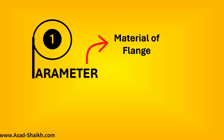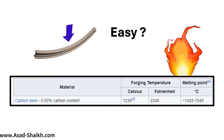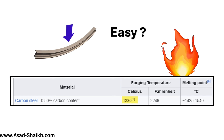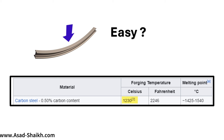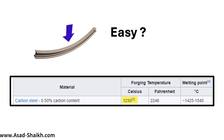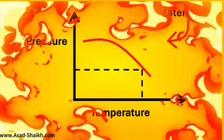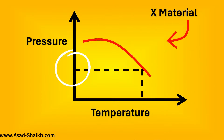Once you know the material, there are two more important parameters. Consider steel — it is not easy to bend or mold. But if you keep increasing the temperature, at around 1200°C you can forge carbon steel with a hammer, and at 1500°C you can even melt it. This gives us an important relationship: as temperature increases, the ability of a material to hold pressure reduces.